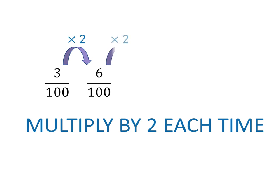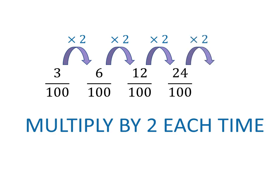Similarly, 6 over 100 times 2 is 12 over 100, 12 over 100 times 2 is 24 over 100, and 24 over 100 times 2 is 48 over 100.